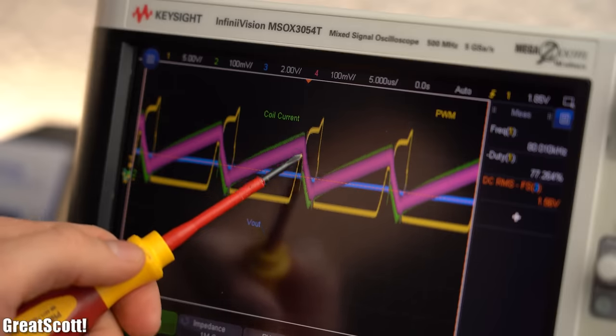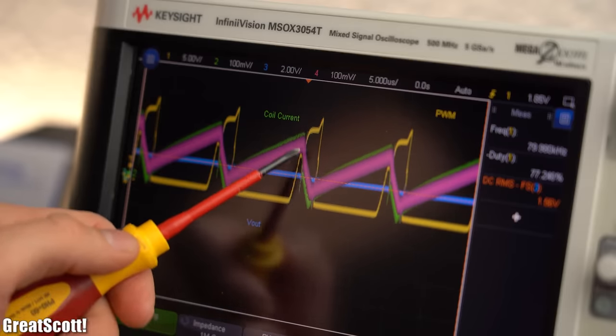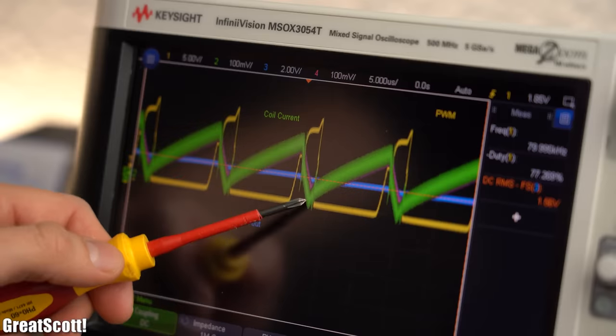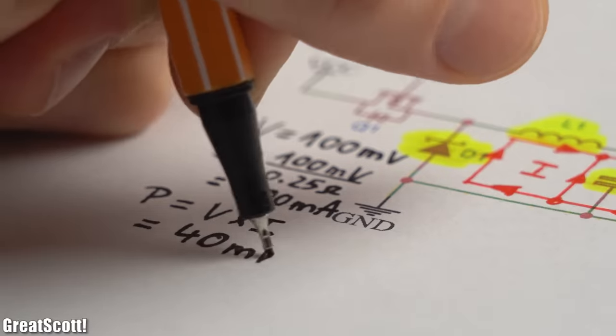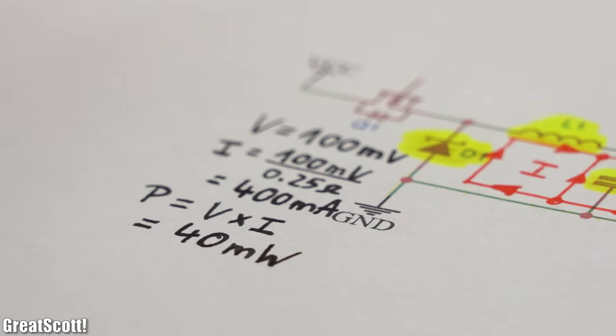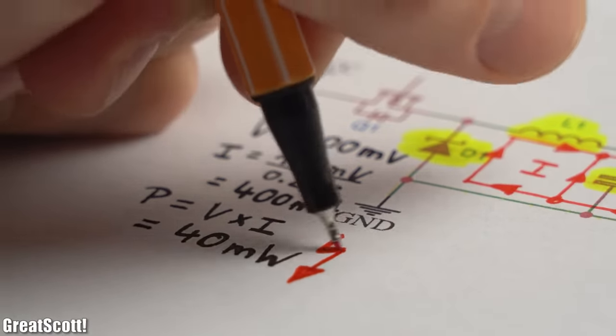As you can see, it is around 200 mV peak, so around 100 mV on average, which multiplied by the practical average current that is around 400 mA equals a power loss of around 40 mW. Which does not sound too bad, but wait until you hear the synchronous design power loss.